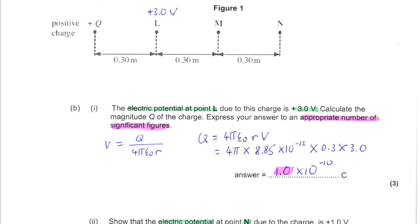So just using the standard equation for potential in a radial field, we have that the potential is Q divided by 4π epsilon_0 R. Rearranging for Q gives us this and then it's just a matter of substitution.